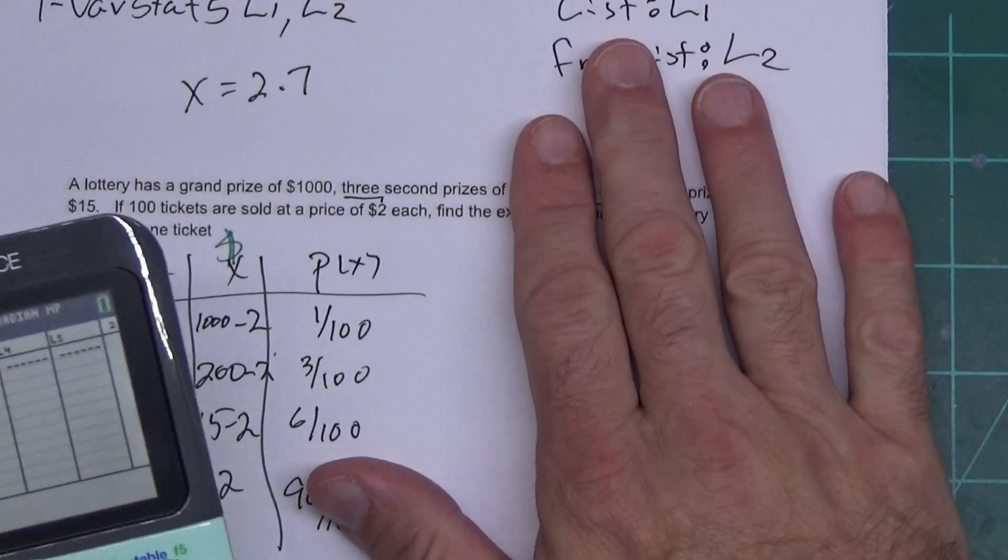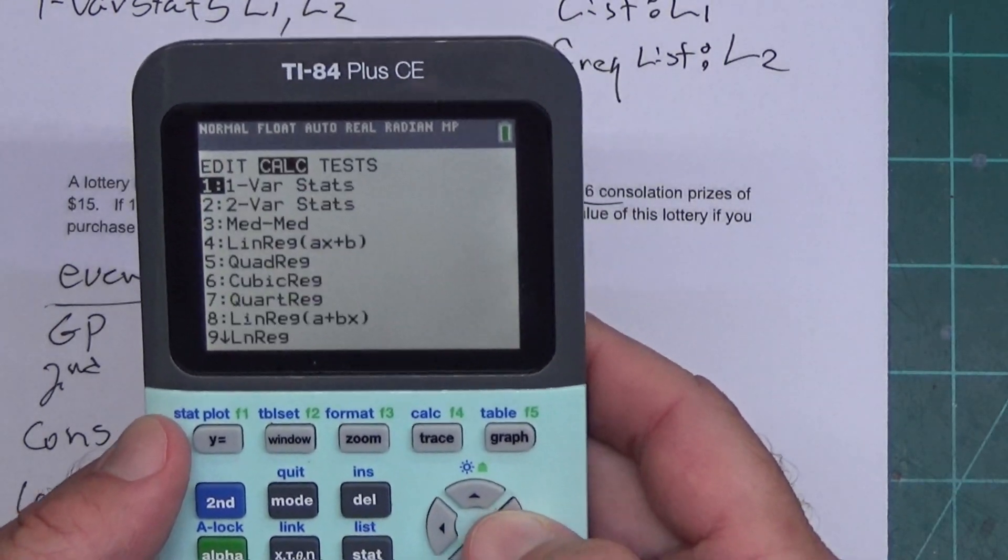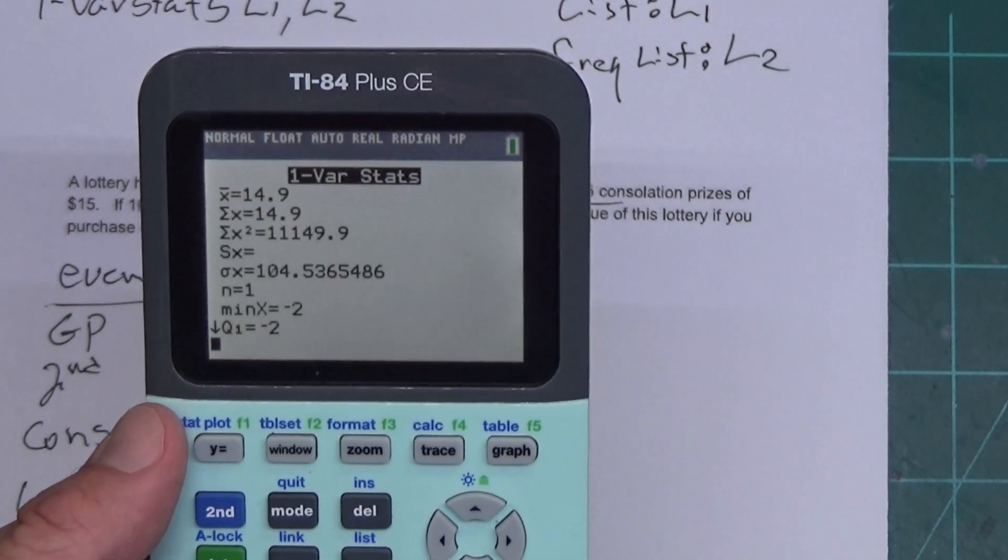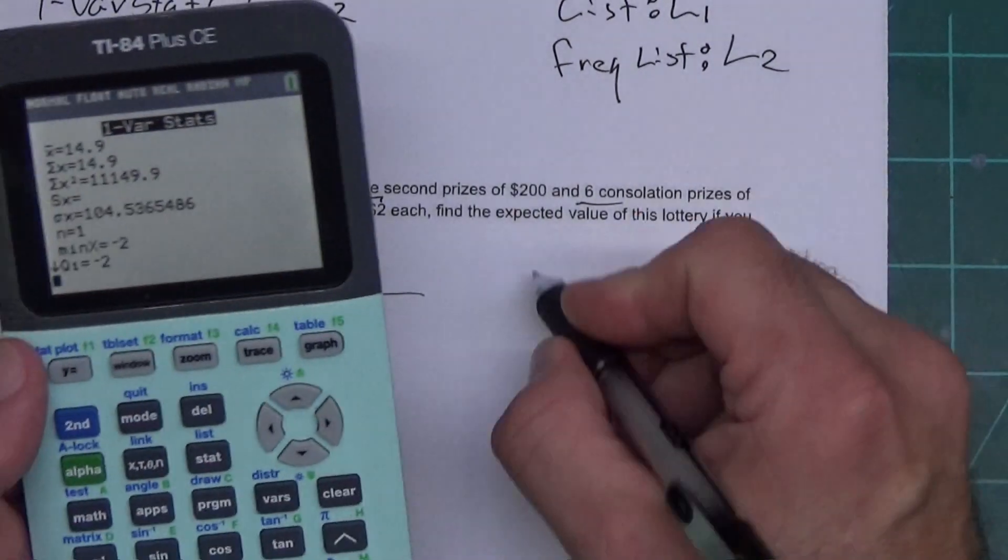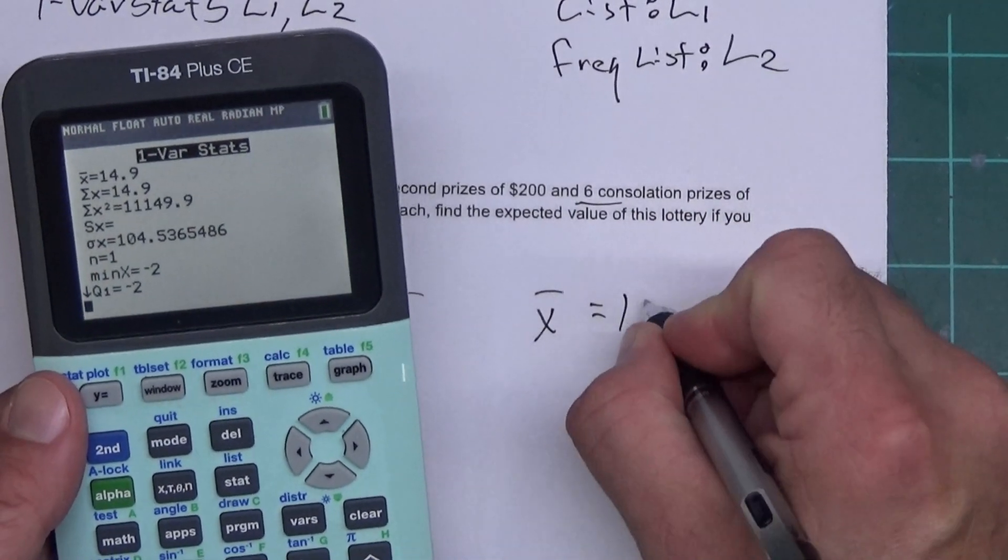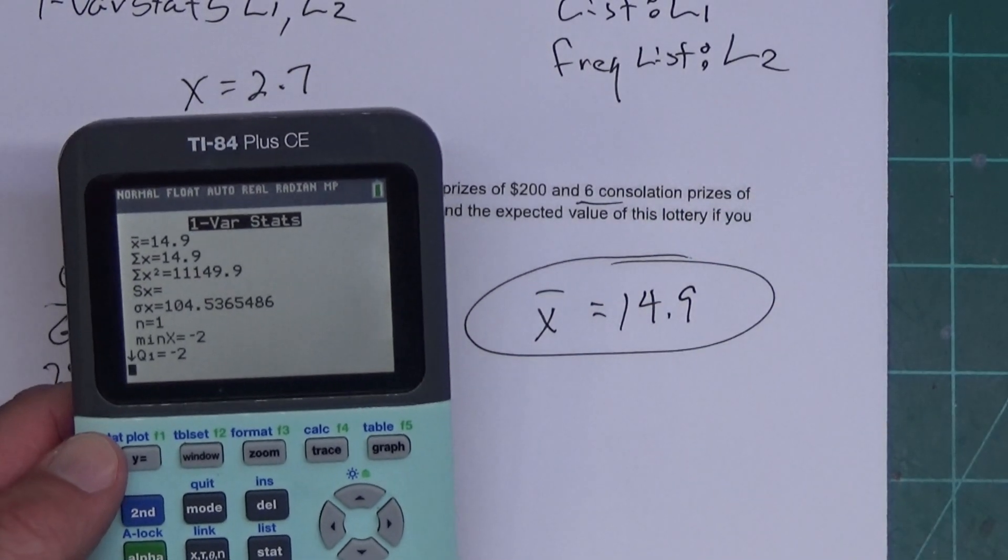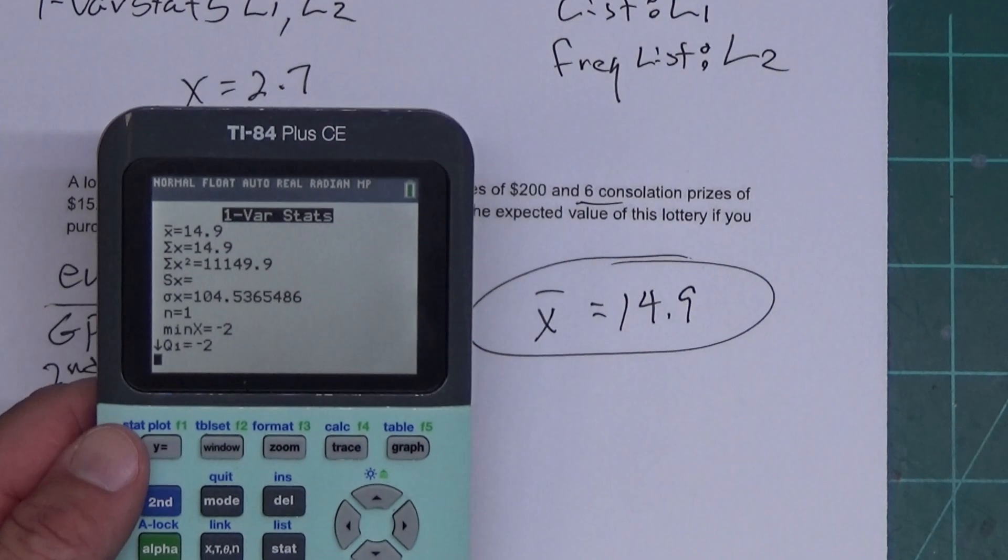Now, I'm going to do the 1-Var Stats thing again. I press STAT over to CALC. Press Enter. It's L1, L2 on the old ones. I hit Calculate and I get X̄ is 14.9. That's positive. It means I want to play that game. That's wonderful. I'm going to win money.